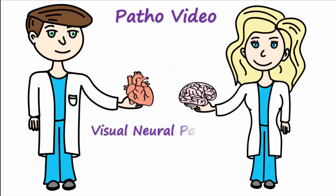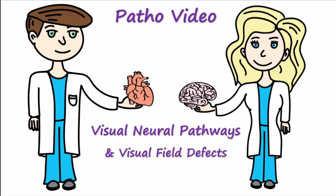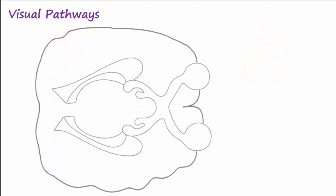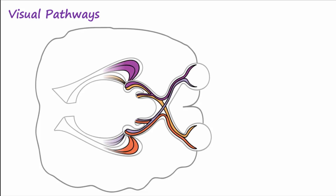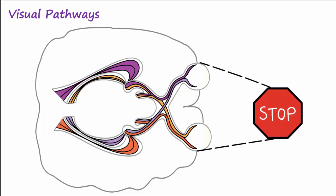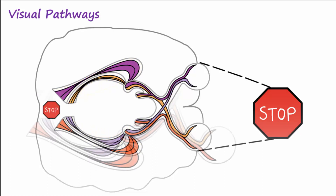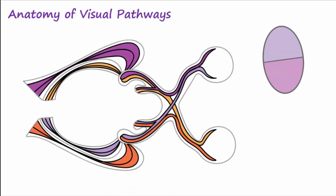Today's topics are visual neural pathways and visual field defects. Visual pathways allow visual information to travel from the retina to the visual cortex in the occipital lobe. When this visual information, traveling by way of electrical signals along neurons, arrives at the visual cortex, we become consciously aware of what we are seeing.